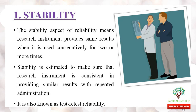The first one is stability. The stability aspect of reliability means the research instrument provides the same result when it is used consecutively for two or more times. Stability is estimated to make sure that the research instrument is consistent in providing similar results with repeated administration. This is also known as test-retest reliability.